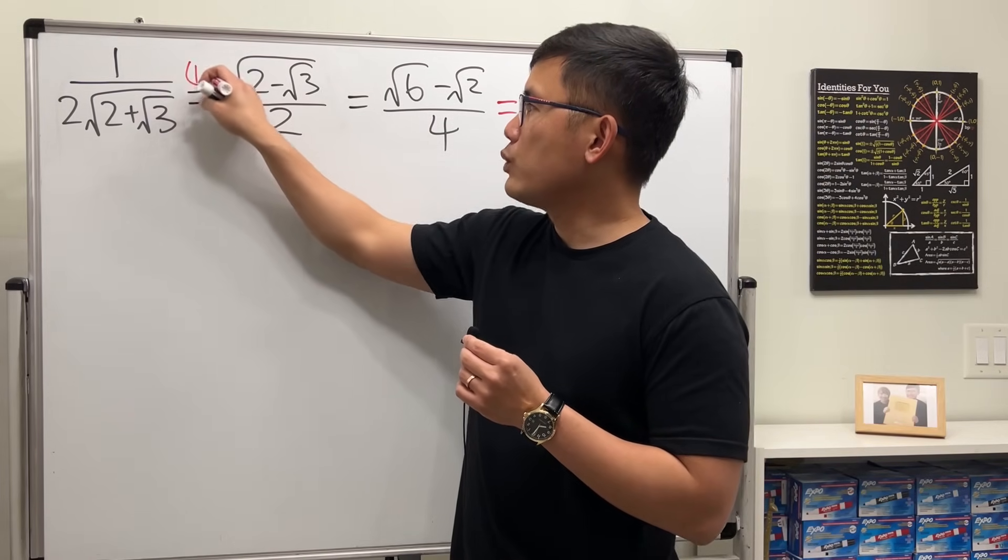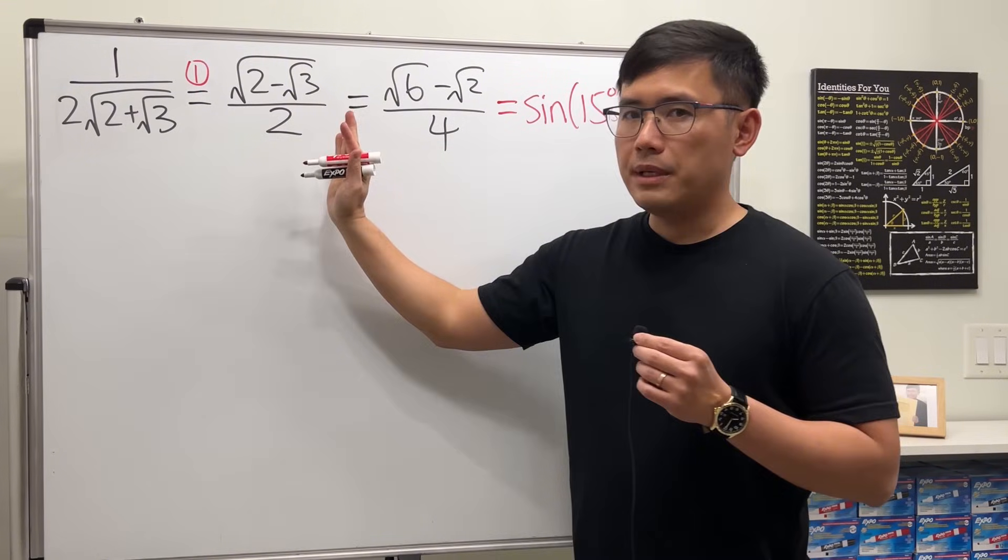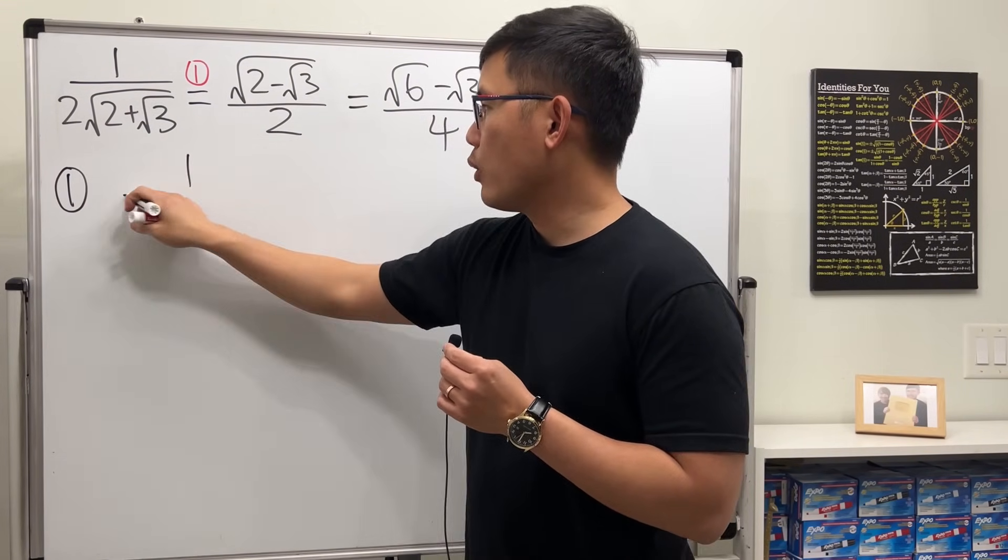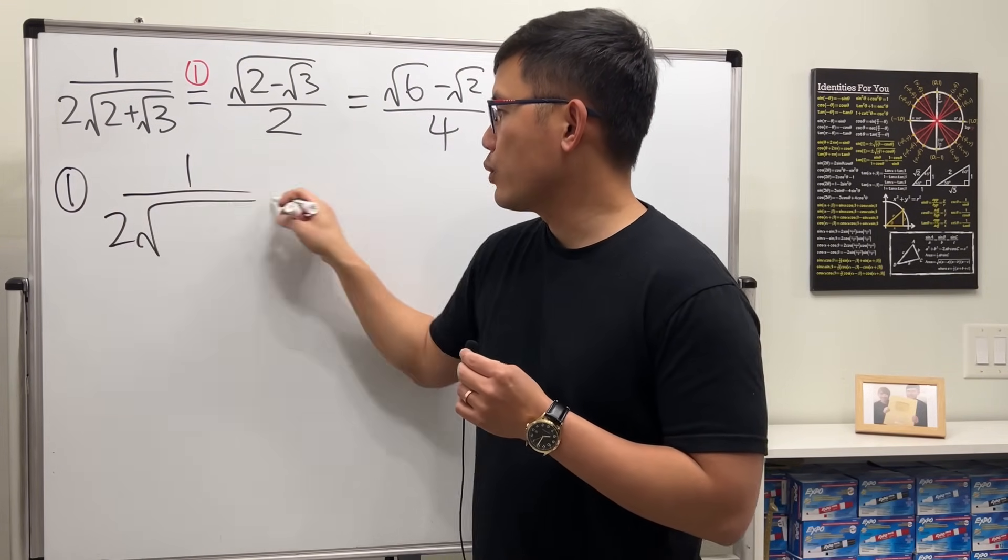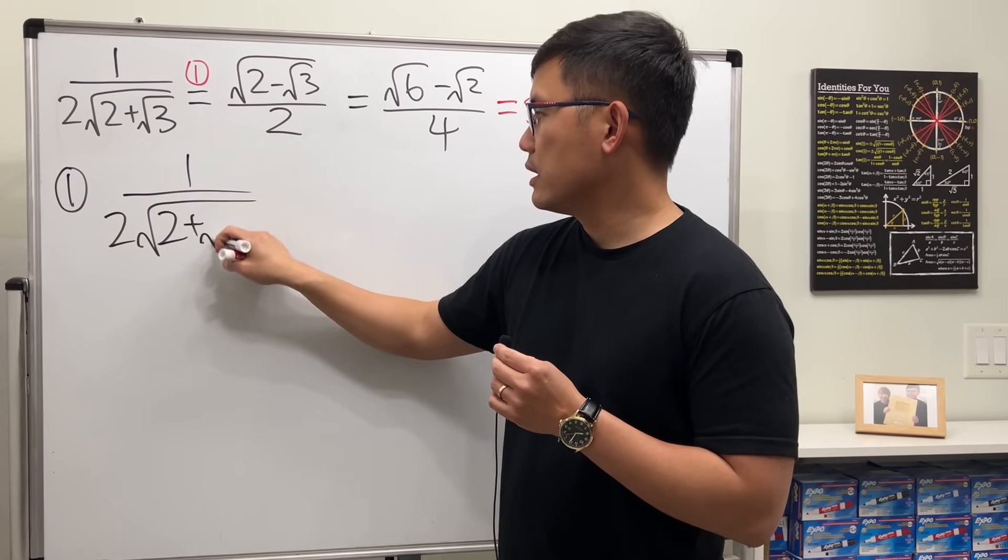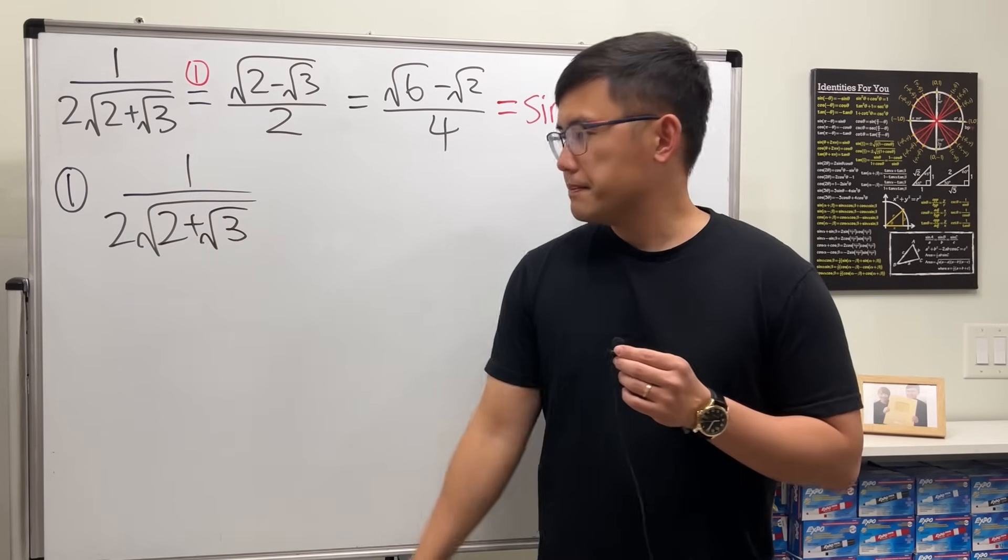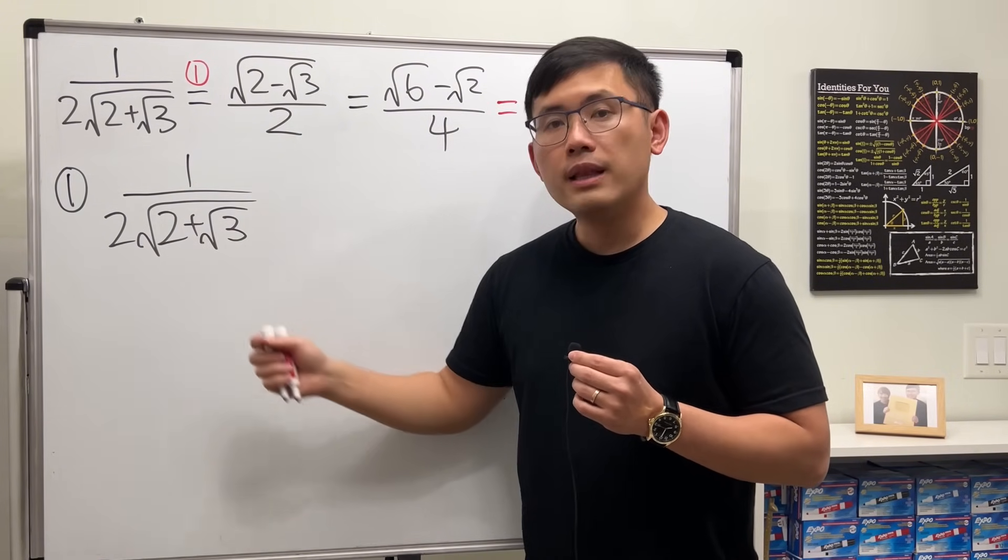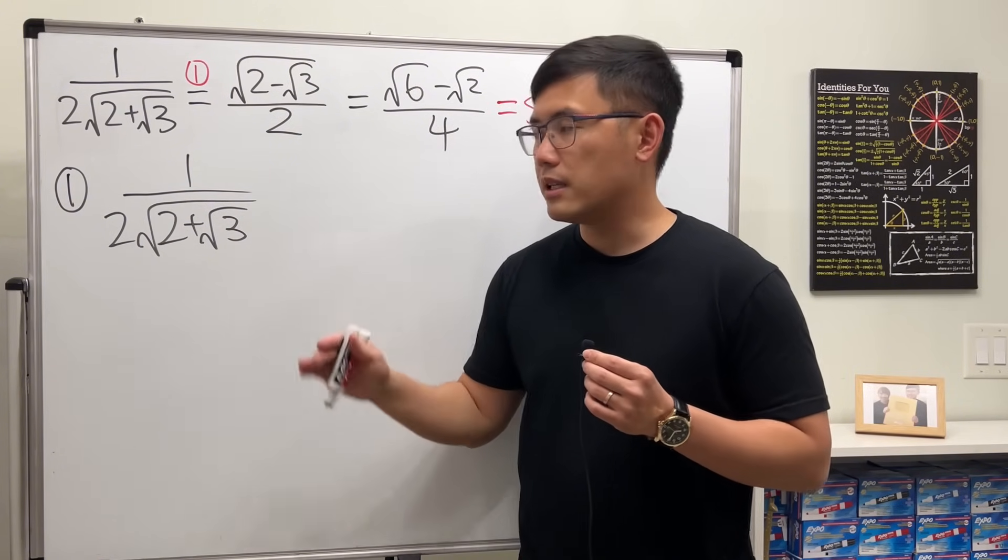I'm going to start with the first one right here. This is the same as that. I'm going to start with the left-hand side. We have 1 over 2 times the square root of 2 plus square root of 3. So what we'll do is, if we look at inside 2 plus square root of 3, let's multiply it by its conjugate on the bottom and also on the top.